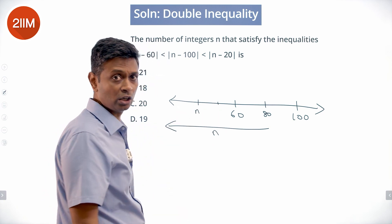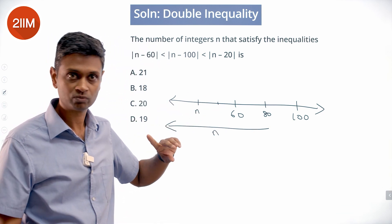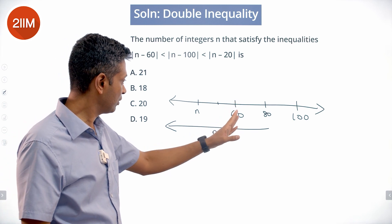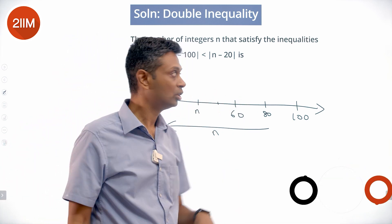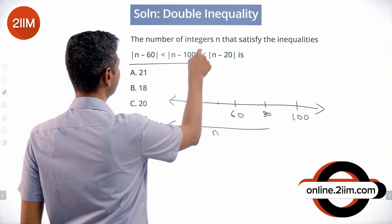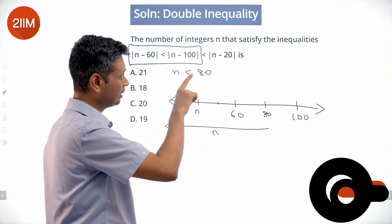n can be anywhere here. |n - 60| will be less than |n - 100| because |40 - 60| is 20, |40 - 100| is 60. This tells us n is less than 80. Let's attack this one.